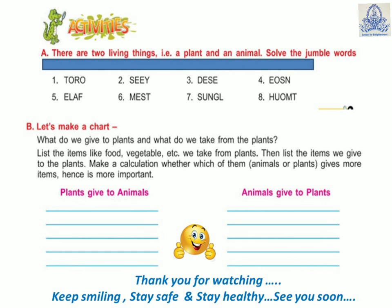The last activity-based questions: Question A has two living things — plants and animals — with jumble words; find the correct word. Question B: write down the things which are given by plants to animals and what animals give to plants. In the next video I will provide notes for this chapter. Until then, complete your assignment work. Thank you for watching — keep smiling, stay safe and stay healthy. See you soon, bye bye!